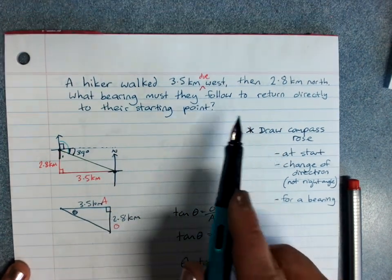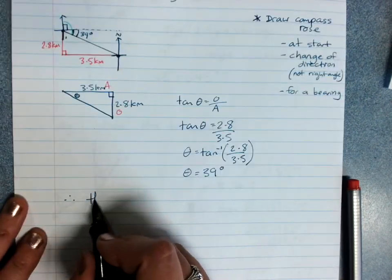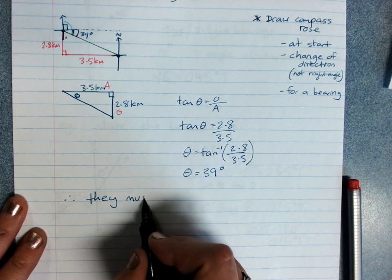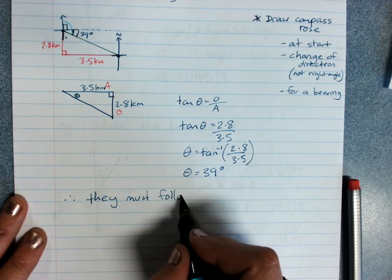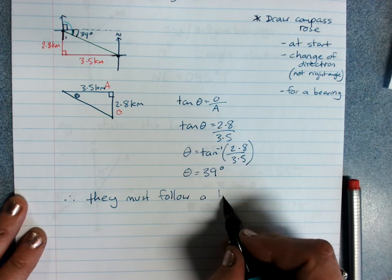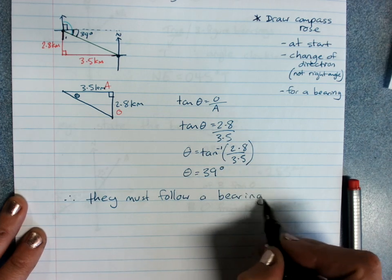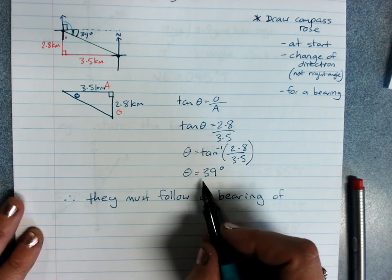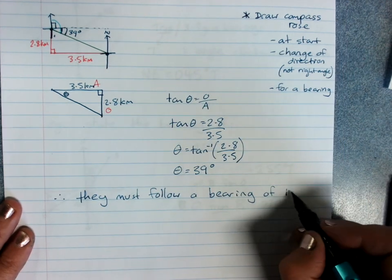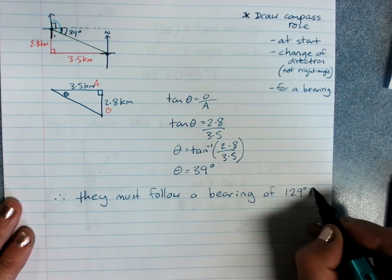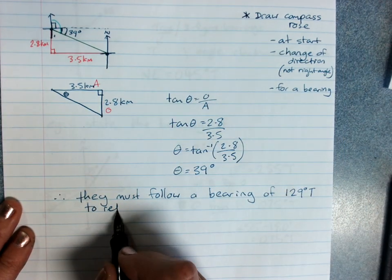Word question means word answer. They must follow a bearing of, now, 39 plus 90 means 129 degrees true. To return.